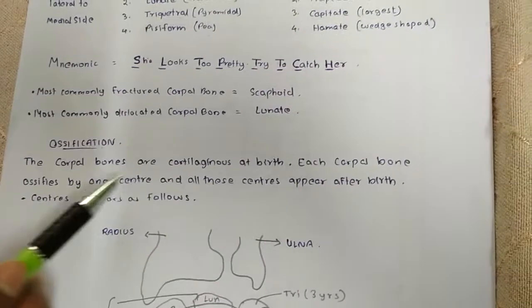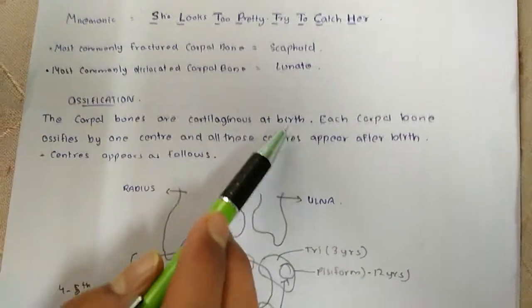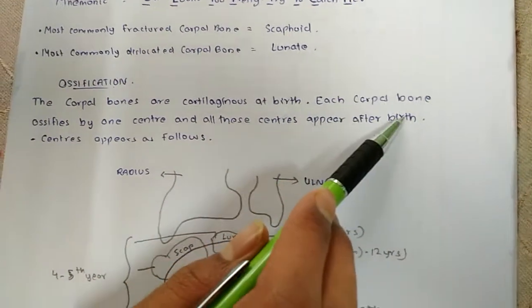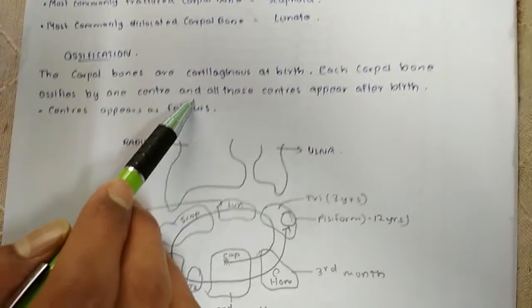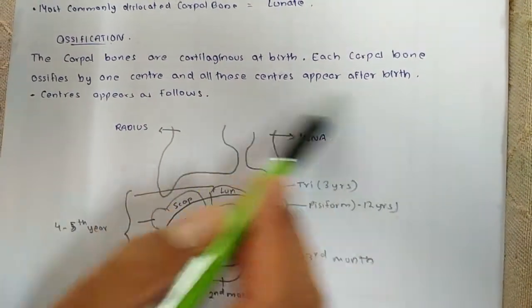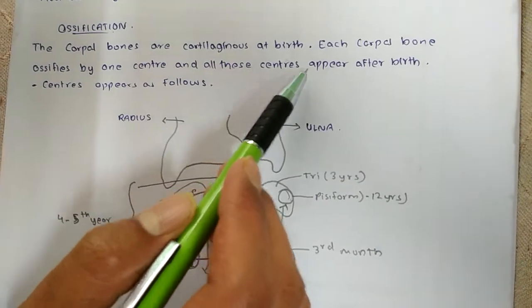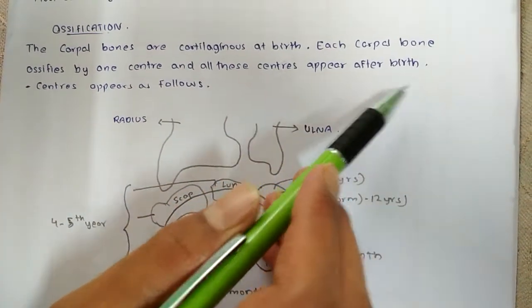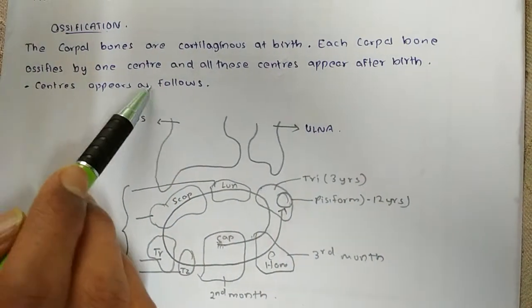Now we will learn about the ossification. The carpal bones are cartilaginous at birth. Each carpal bone ossifies by one center and all the centers appear after birth. This is very important, that all the centers appear after birth. The centers appear as follows.